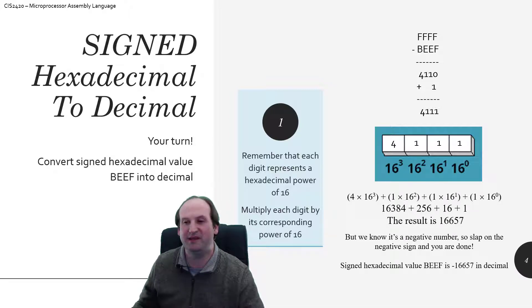So B, E, E, F. So I can take, and I can just take F, F, F, F, four digits and subtract off.